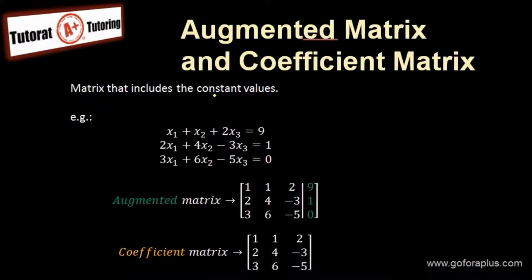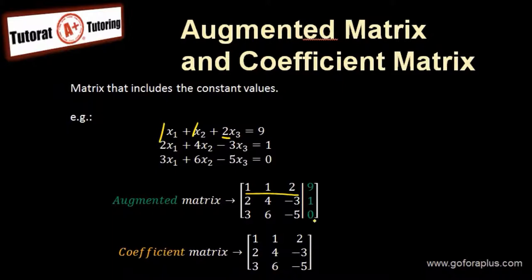So what is an augmented matrix, and what is a coefficient matrix? A matrix is basically used for solving equations. In this example, we have 3 equations and 3 unknowns — 3 variables. The coefficients of each variable — 1, 1, 2 — form my first row, and 9 is the constant value written on the side with a bar. Second row: 2, 4, minus 3 — and the constant value 1. Last row: 3, 6, minus 5 — and 0. This is what we call an augmented matrix. A coefficient matrix is basically the augmented matrix without all the constant values.